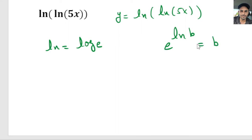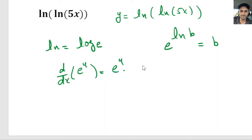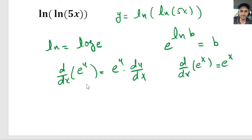So e to the ln of b equals b. The other derivative we have to know is that d over dx of e to the u equals e to the u times du over dx. We know that the derivative of e to the x equals just e to the x, but if we have the derivative of e to the u where u is some function of x, then the derivative is e to the u times du over dx.